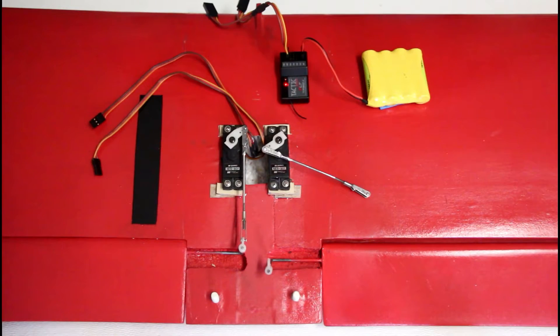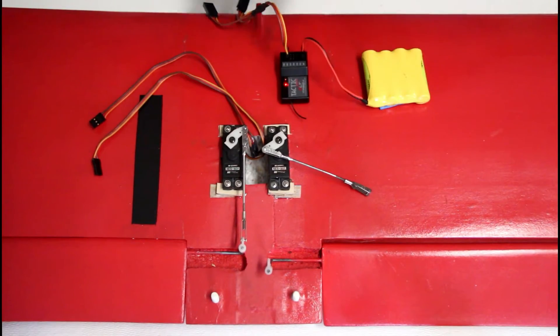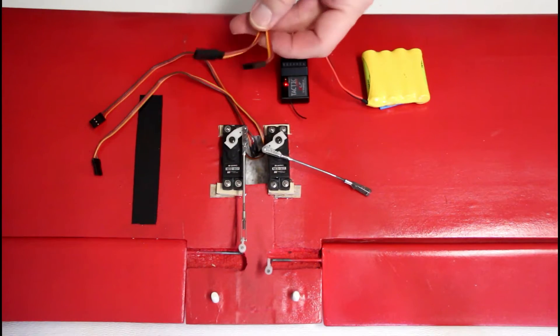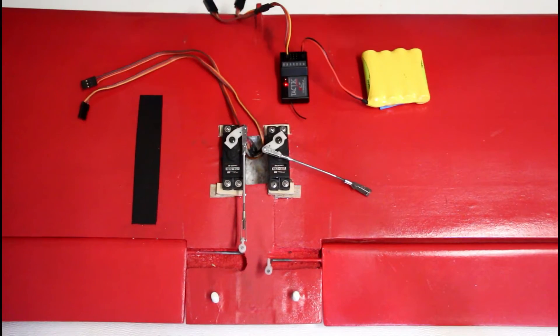So now what I've done with this wing is I've modified it with two servos, but more importantly, let's look at servo direction. What I've done here is I have a Y-harness which I've taken channel 5 with, which is going to a toggle switch, and I'm going to send it to two servos.